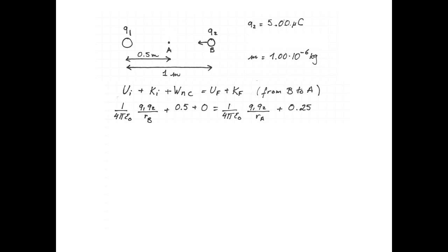Q1 is fixed, so the total kinetic energy of the system is always just the kinetic energy of q2: 0.5 joules at point B, 0.25 joules at point A.